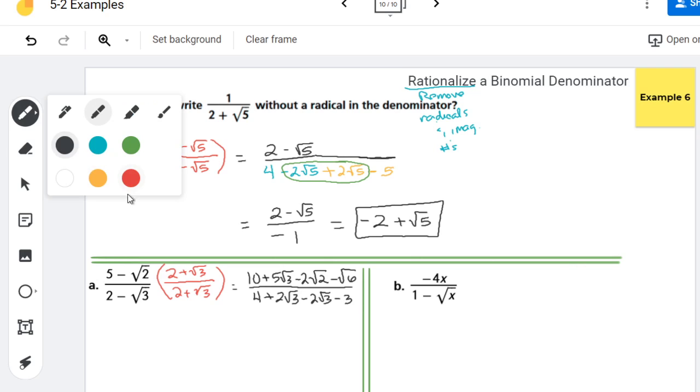So then I'm looking for some like terms that I could combine. We have 2 root 3 and negative 2 root 3. Up here, this stuff doesn't combine, because I don't have the same index and radicand on any of these. So they just kind of chill out awkwardly. And that's fine.